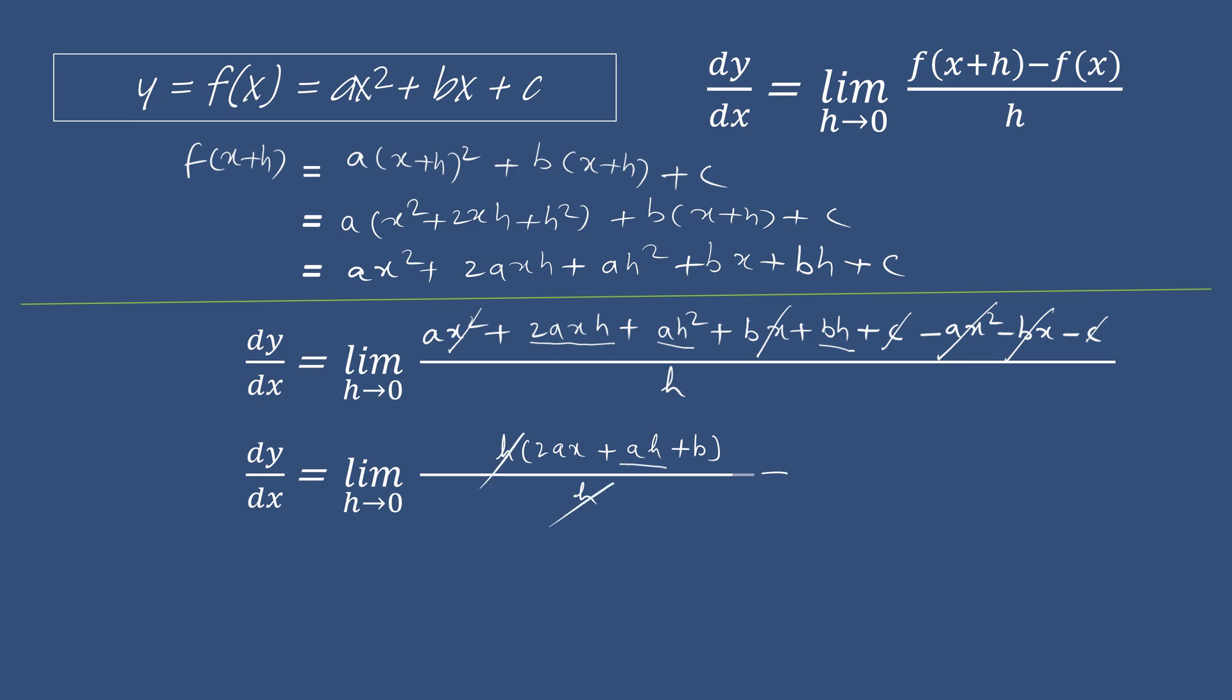Now as h will tend to 0, ah will also tend to 0. So what remains is twice ax plus b as the limit of the function.